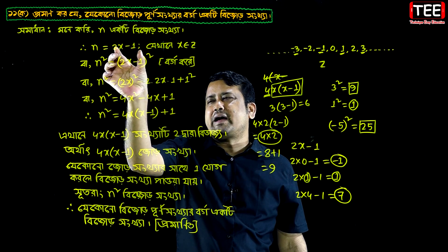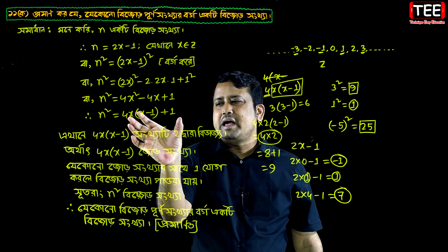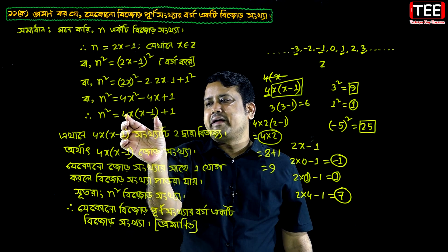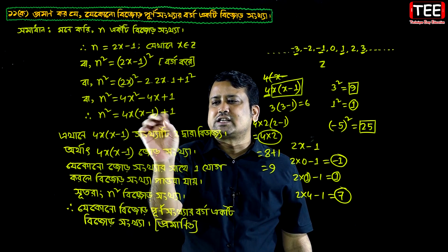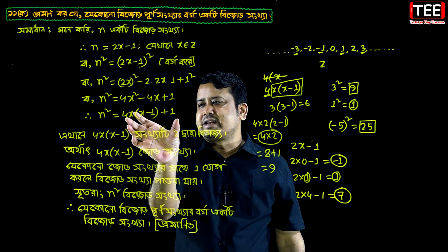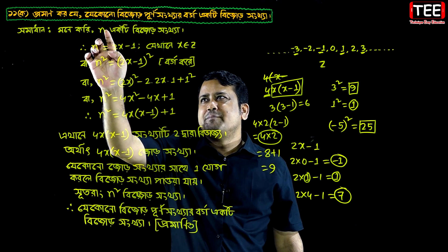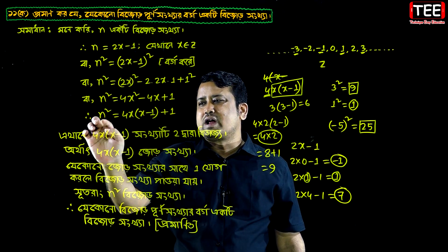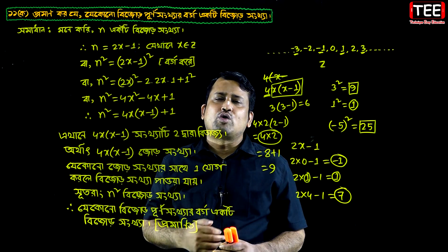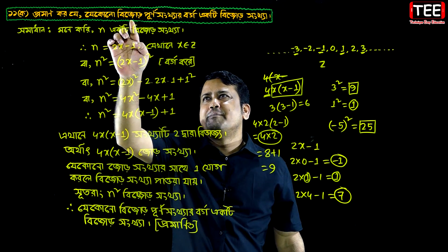2x-1. We have 2x-1. Basically, we have 2x-1, we have 3x-1.